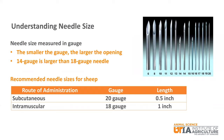Needles come in all sizes. The size of a needle opening is measured by gauge. The smaller the gauge, the larger the needle opening. For example, a 14 gauge needle is much larger than an 18 gauge needle. For subcutaneous injections, needles should be 20 gauge and a half inch in length. In some cases, with thick medicines and/or cold weather, an 18 gauge needle may be necessary. For intramuscular injections, needles should be 18 gauge and one inch in length.